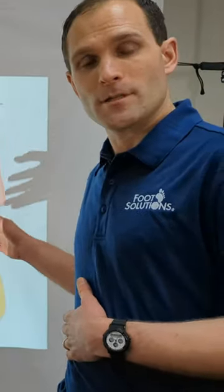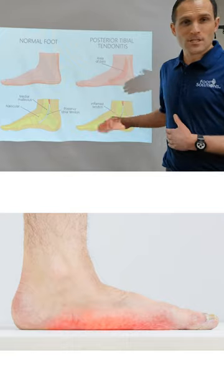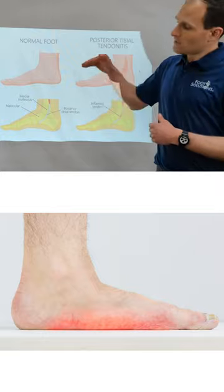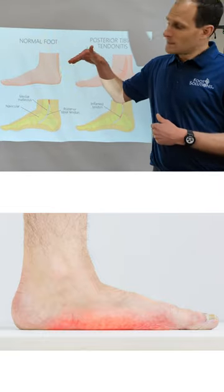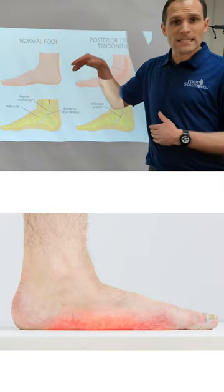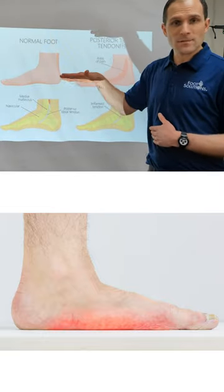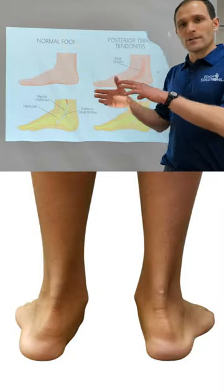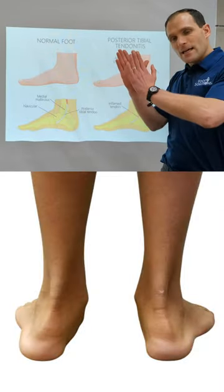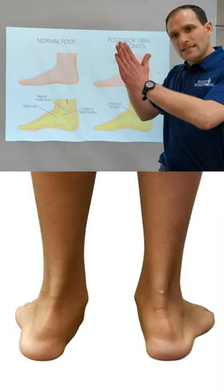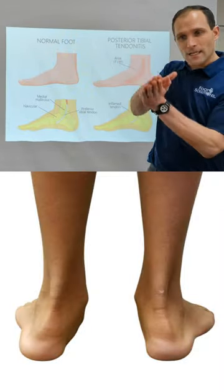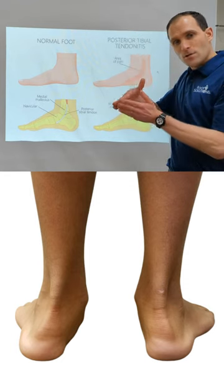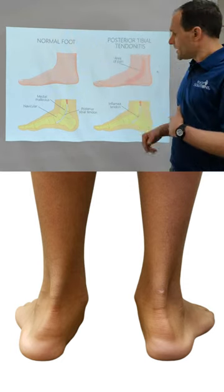The primary cause of posterior tibial dysfunction is arch collapse. Usually, as your arch is weight-bearing, it collapses significantly — sometimes even the ankle turning in. We call it a valgus ankle, where the ankle itself or the Achilles tendon itself is turning in, and there is a curvature at the heel as a result.